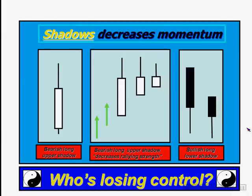The opposite is true when you're looking at shadows. Here are examples of different types of shadows in the market, some a little unorthodox just to make this as educational as possible. Shadows are not just extremes of the day — shadows show you who's losing control. Not just who's in control, but who's losing control. One way to answer that question is by looking at the shadows, the extremes of the session, where the market was but isn't anymore. Shadows show you momentum which has decreased.